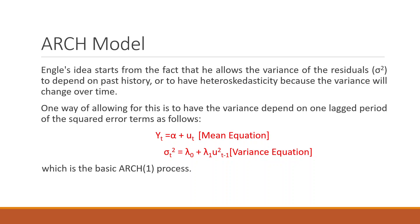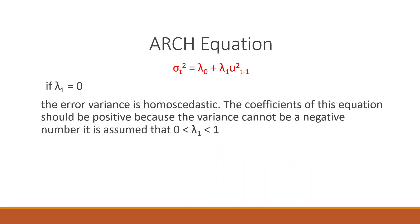One way of allowing this is to have the variance dependent on one lagged period of the squared error terms. Here, Yt equals alpha plus mu_t is the mean equation. The present volatility — the variance sigma_t squared — equals lambda_0 plus lambda_1 times mu squared_{t-1}. This is the basic ARCH(1) process. If lambda_1 equals zero, the error variance becomes homoscedastic. It is necessary that the coefficients are positive because the variance cannot be negative, so lambda_1 should be between zero and one.